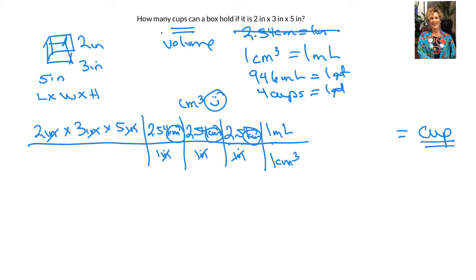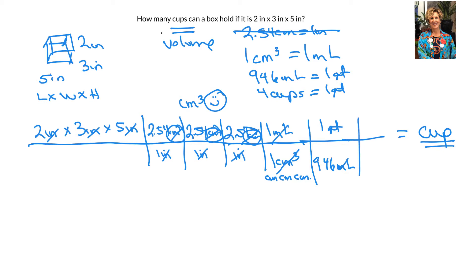Now I can use my cubic centimeter equivalence: one cubic centimeter equals one milliliter. This is cubic centimeters, which literally means centimeters times centimeters times centimeters, so those centimeters cancel out. Now I can get rid of milliliters — 946 milliliters is in one quart, so my milliliters cancel. Then in one quart there are four cups.